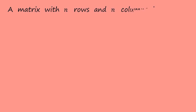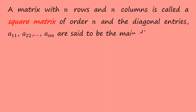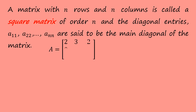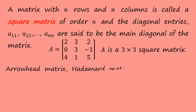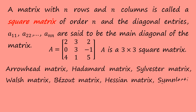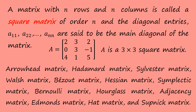A matrix with n rows and n columns is called a square matrix of order n, and the diagonal entries a11, a22, up to ann are said to be the main diagonal of the matrix. For example, we have this 3 by 3 matrix. There are many examples of square matrices, such as arrowhead, adamant, Sylvester, Roche, Bezout, Hessian, symplectic, Bernoulli, hourglass, adjacency matrix, Edmos matrix, Hart matrix, and Sopnick matrix.